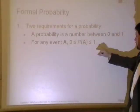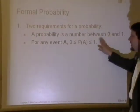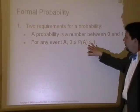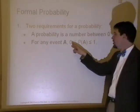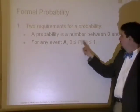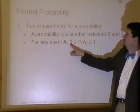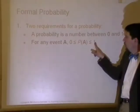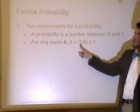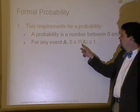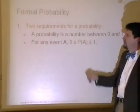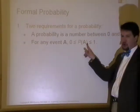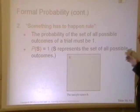Alright, two requirements for a probability. Probability has to be between 0 and 1 and we write the probability as P of event A. And here's the actual probability we can set up as a mathematical symbol: 0 is less than or equal to the probability of event A is less than or equal to 1. If I wanted to say the probability of pulling out a red card, I would say P(red). If I want to talk about the probability of rolling a 4, P(4). That's how we would write it.